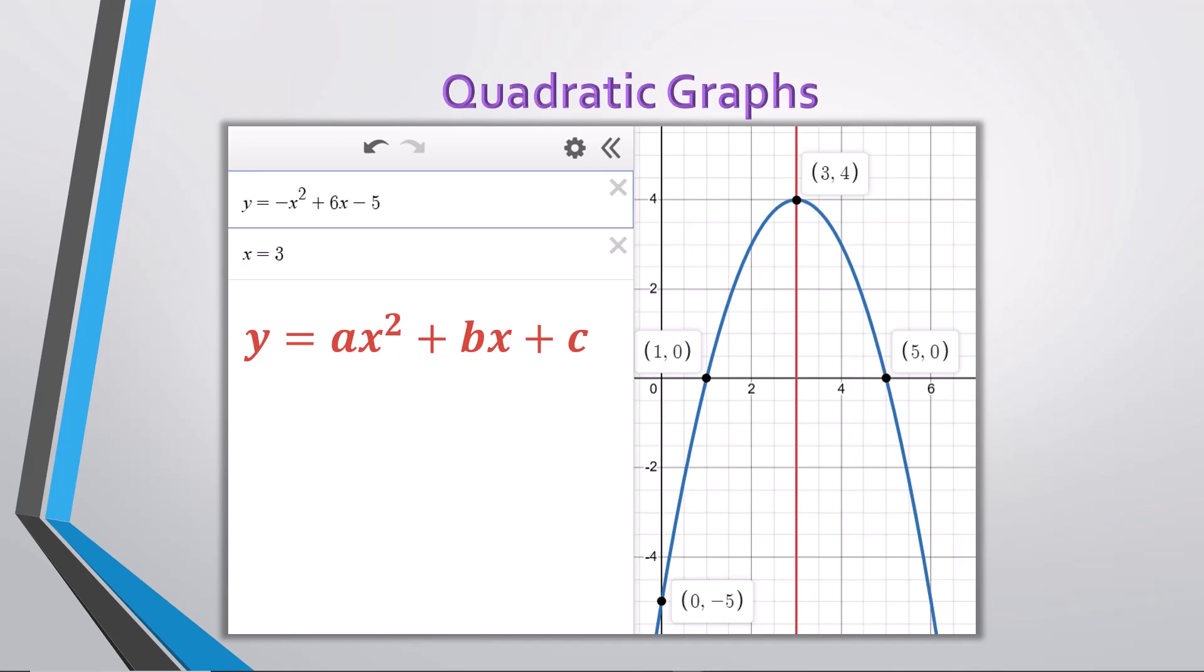Using the standard form of the quadratic equation, y equals ax squared plus bx plus c, we note in this equation the a value as negative 1, b as 6, and c as negative 5, and then use a formula that works to find the x-value we need, negative b over 2a. Replacing the values 6 for b and negative 1 for a, we get the expression negative 6 over 2 times negative 1, which simplifies to negative 6 over negative 2, and finally, x equals 3.